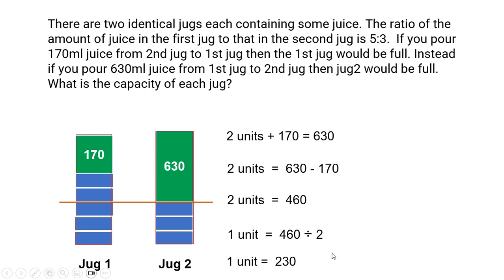Now our objective is to find the capacity of each jug. So let's start with jug 1. Jug 1 if you look at it: 1, 2, 3, 4, 5 units plus 170 is the capacity of jug 1. So we write it as 5 units plus 170 and that is equal to 5 times 230 plus 170 which is equal to 1150 plus 170 which is 1320 ml.